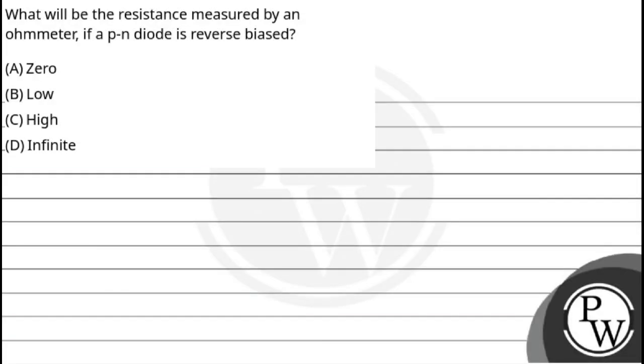Hello everyone, let's see this question. The question says what will be the resistance measured by an ohmmeter if a p-n junction is reverse biased? And our options are: option A - zero, B - low, C - high, and D - infinity. So the key concept...